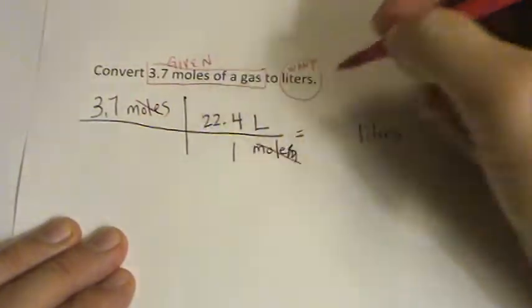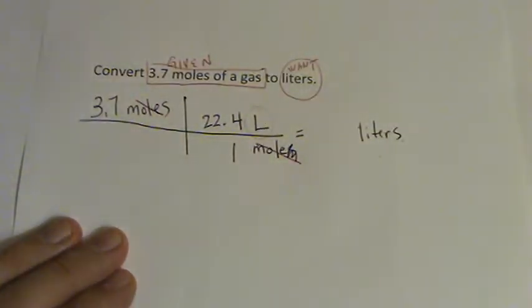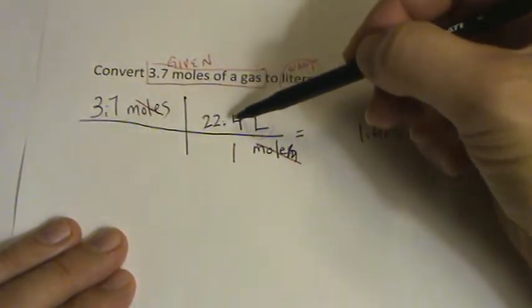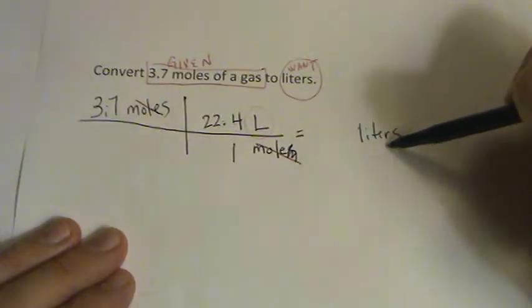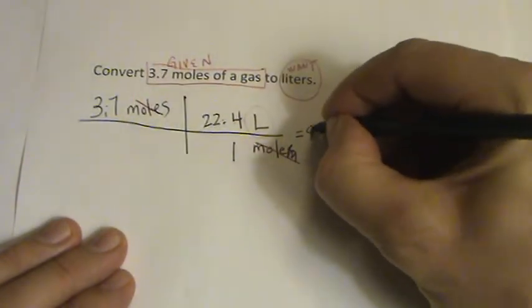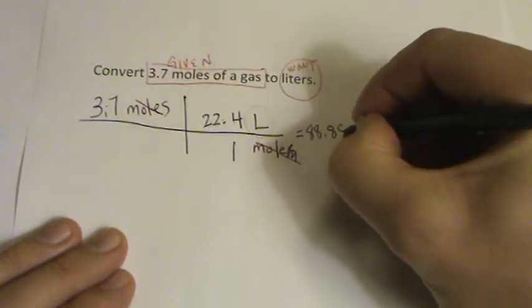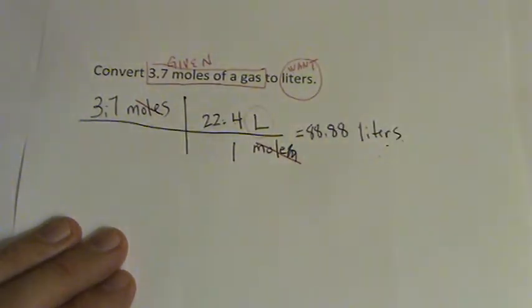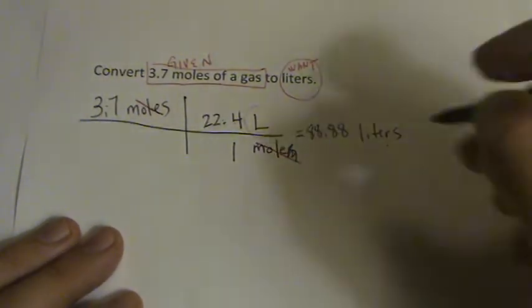Our moles are going to go away. And we've got liters here, and that's what we want to end up with. So we'll multiply 3.7 times 22.4 liters. There's our liters. And if you multiply 3.7 times 22.4, you get 88.88 liters. That's your final answer.